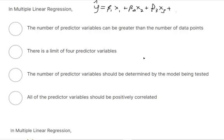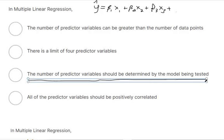So the number of predictive variables should be determined by the model being tested. Yeah, that's true. The number of predictive variables should be determined. This is just saying that however many x values you choose depends on what you're trying to predict for.